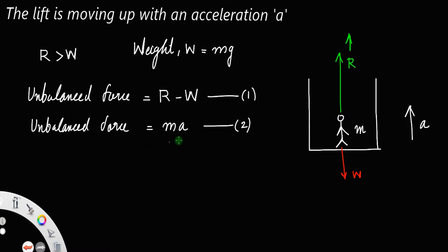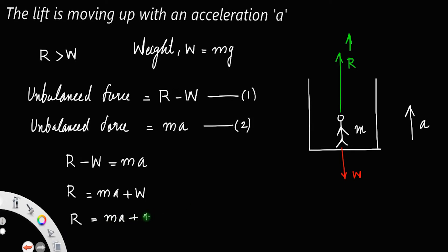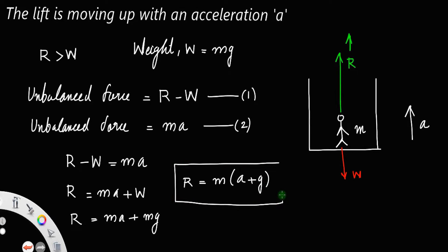In any case the unbalanced force will be ma, where a is the acceleration of the body. Equating equations 1 and 2, you get R minus W equals ma, or R equals ma plus W. Substituting W equals mg, R equals ma plus mg, taking m outside: R equals m(a + g). This is the apparent weight of a person residing inside a lift accelerating upward.